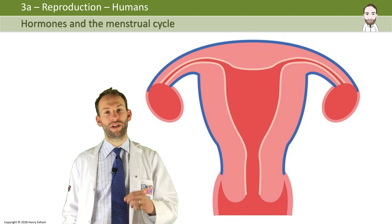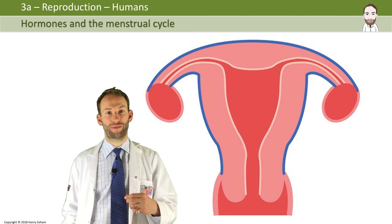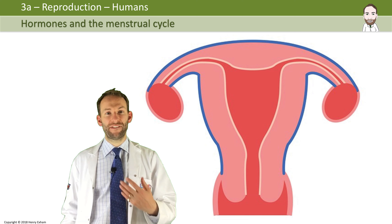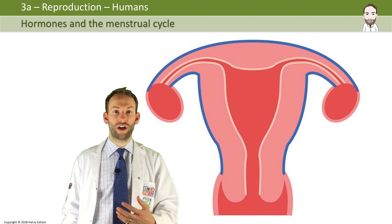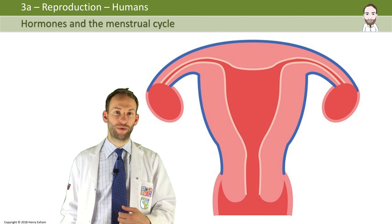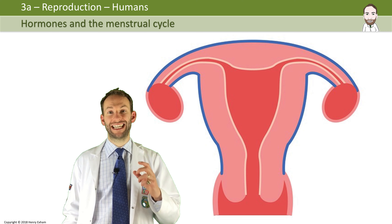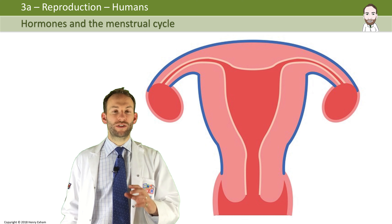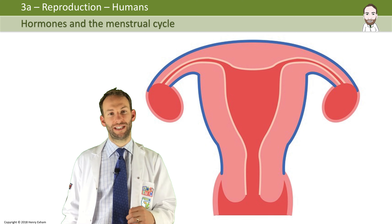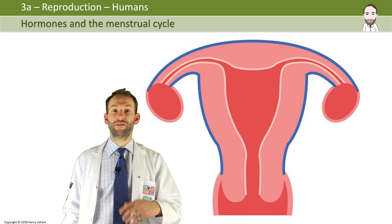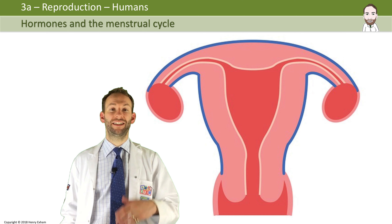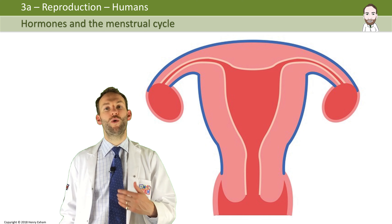Every month the female body prepares for pregnancy. This is a big deal — it has to get ready every month in case it gets pregnant. If you don't get pregnant that month, it resets and does the whole thing again the following month. This involves releasing an egg each month and making sure the uterus is in perfect condition for an embryo to be implanted in it. If pregnancy does not occur, the body resets and starts the whole process again.